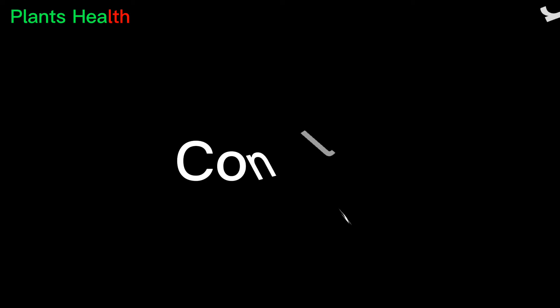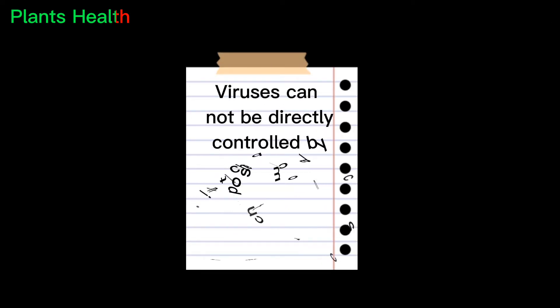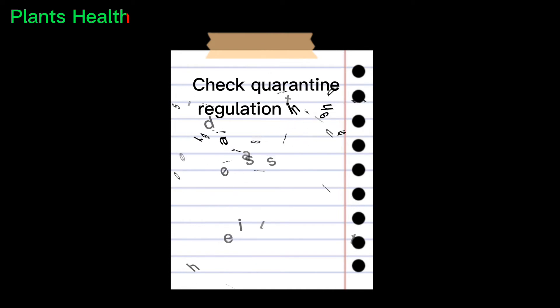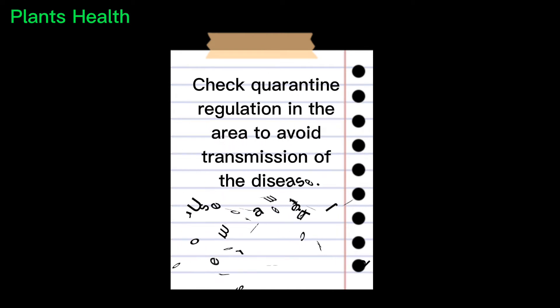Control. Viruses cannot be directly controlled by chemical options, but vectors can be controlled. Check quarantine regulations in the area to avoid transmission of the disease. Use plant material from certified sources.